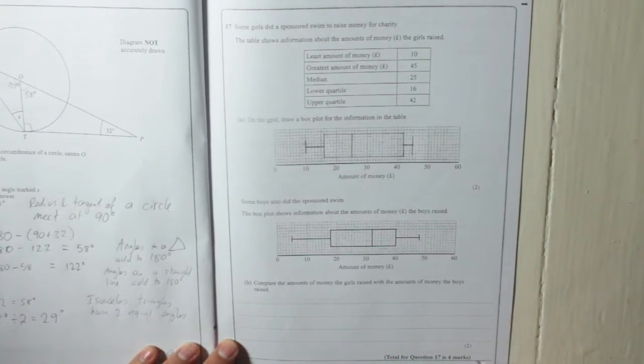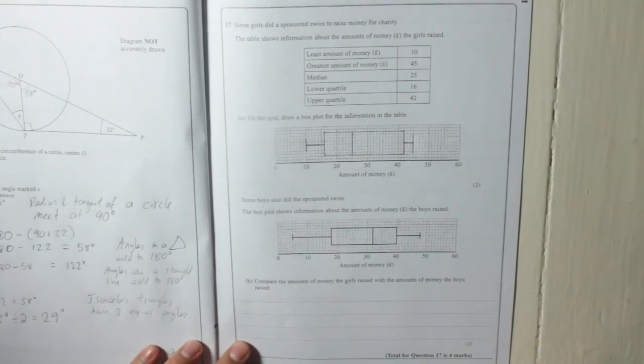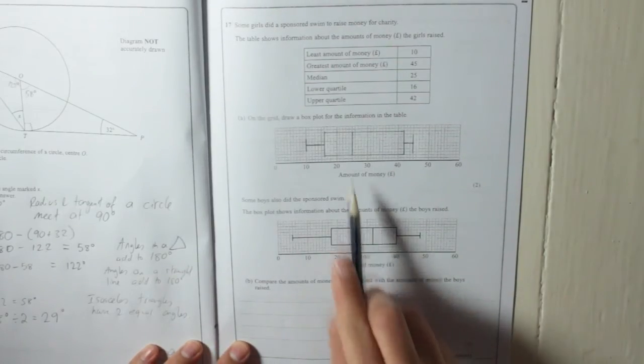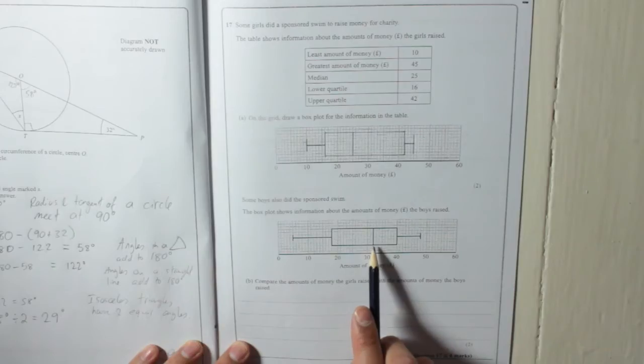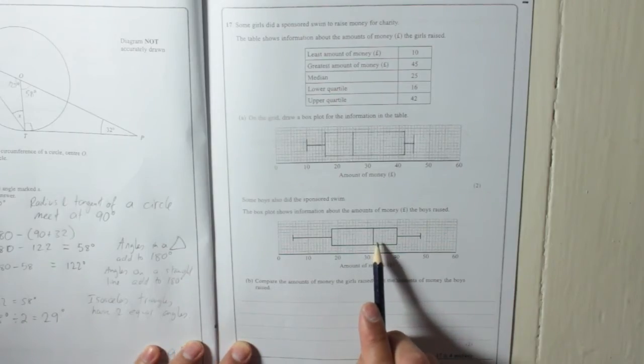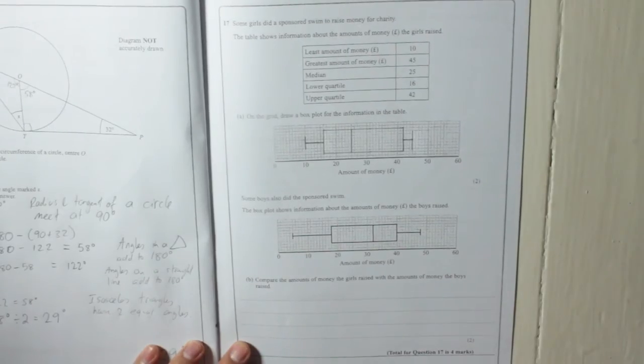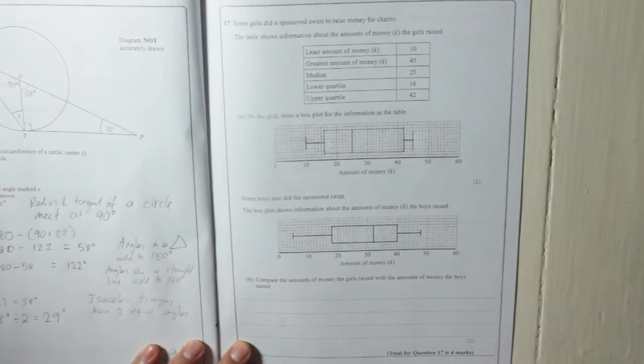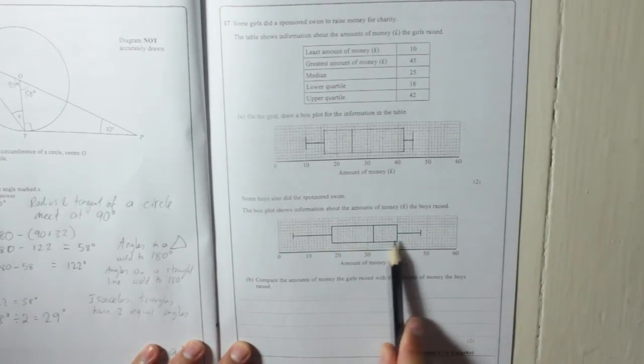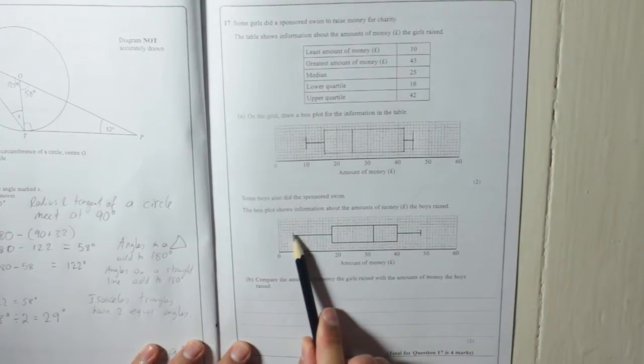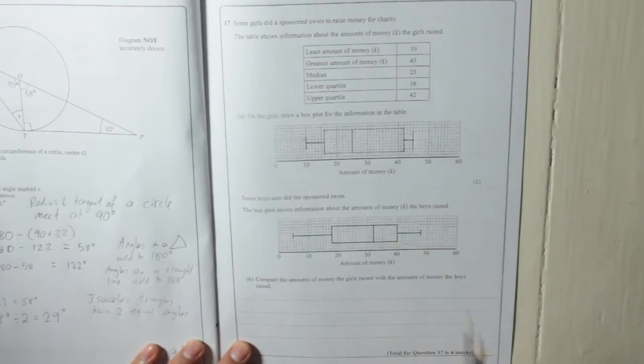Right. To get the two marks here, you need to compare the medians, which is there and there. And you can see the boys' median is higher. And then also, you need to compare a measure of spread, which means either compare the interquartile range or the range.